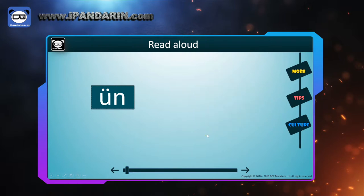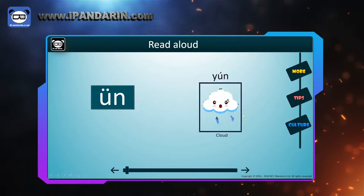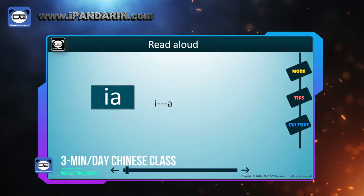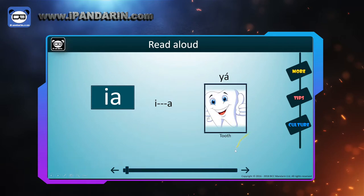ÜN — repeat after me: ÜN. And in Chinese, 云 (yún), which means cloud. IA — formed by 'yi' and 'a'. And in Chinese, 牙 (yá), which means tooth.